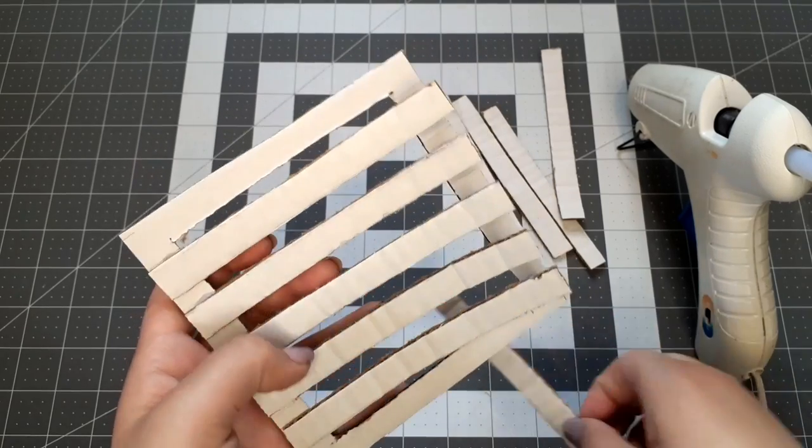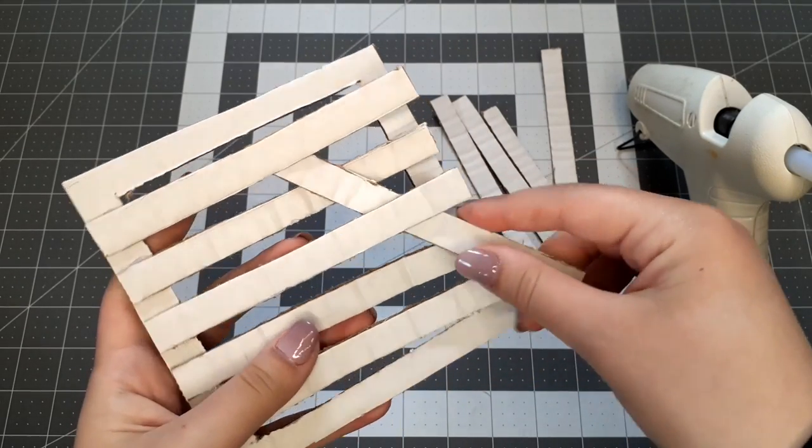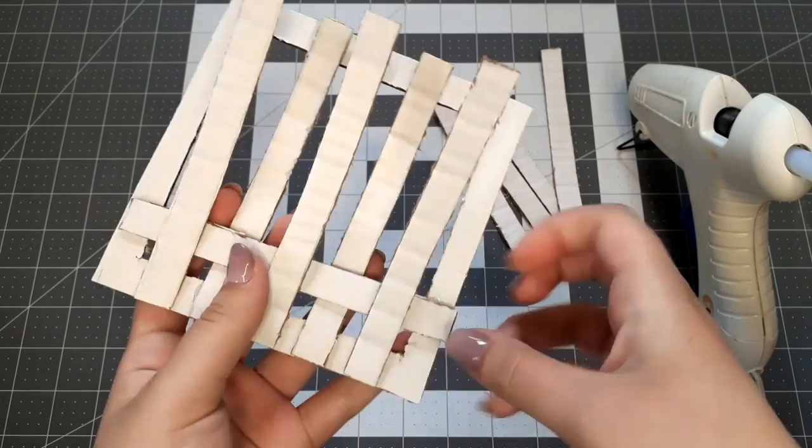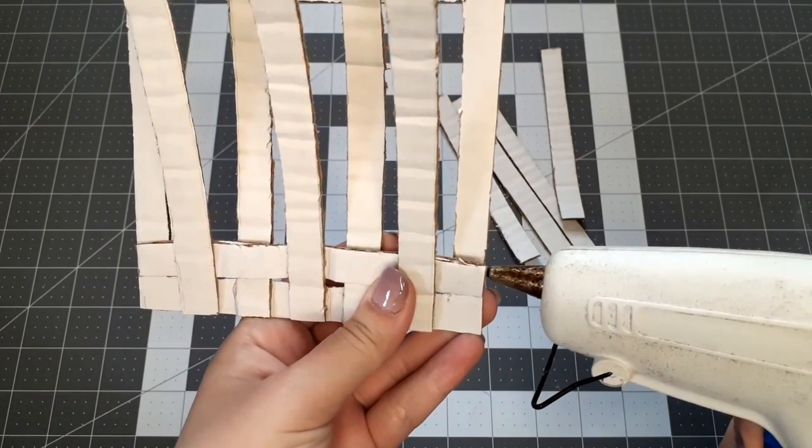Now we'll take a cardboard strip and weave it into the square frame. You're going to move under, over, under, over, and then under again. Then glue the ends to the side of the square frame.